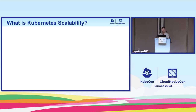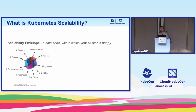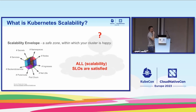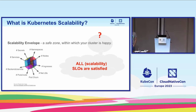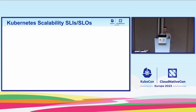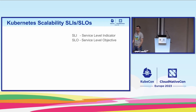So what is the scalability envelope? The scalability envelope is a zone — a subset of this multi-dimensional space — within which your cluster is supposed to be happy. What does it mean for the cluster to be happy? It basically means that the scalability SLOs are satisfied. If you are within this subspace, within this scalability envelope, it means your scalability SLOs will be — or at least should be — satisfied. Just quickly: SLI is Service Level Indicator, which you can conceptually think about as a metric. SLO is Service Level Objective — you can think of it as that metric plus a threshold that needs to be satisfied in order for the SLO to be satisfied.